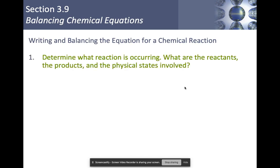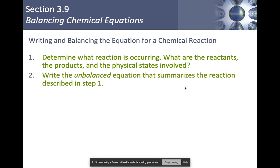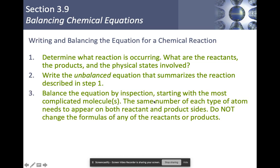The coefficients tell us the amounts of reactants used and products formed. To write balanced equations: first, determine the reactants and products and their physical states. Second, write an unbalanced equation with correct formulas. Third, balance by inspection — start with the most complicated molecule, adjust coefficients on one side, then the other, going back and forth. Never, ever change the subscripts of the reactants or products — that would be a very grave mistake.